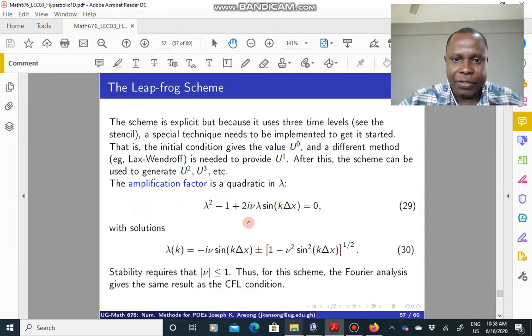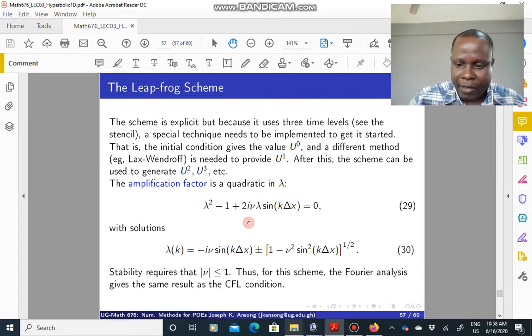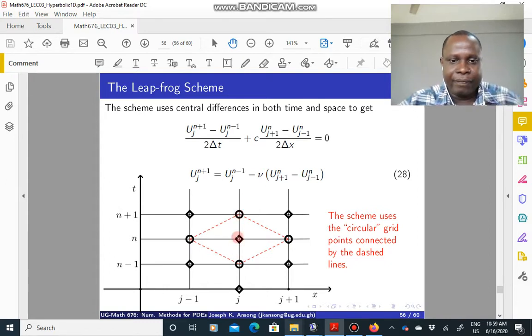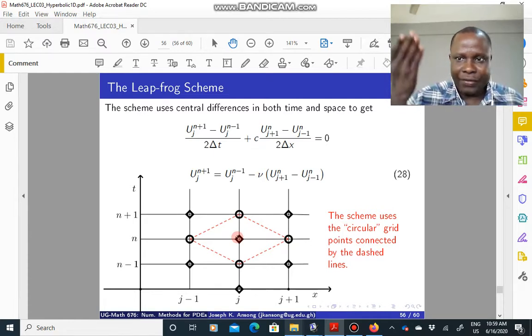But in this case, you see that it uses three time levels. It uses this: there's a level n minus 1, there's a level n, there's a level n plus 1. So there are three time levels here. But usually you are just given one time level, the initial condition, say u at 0.